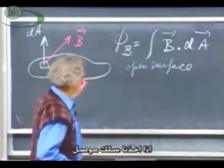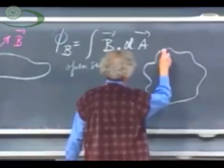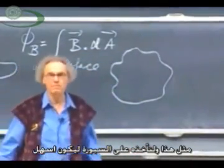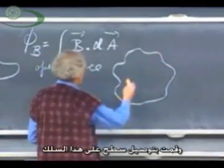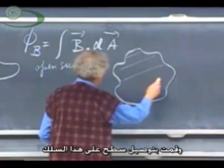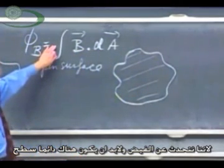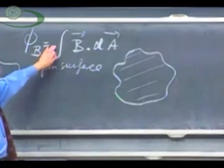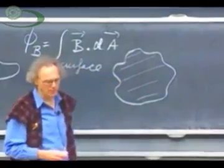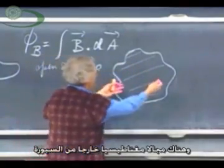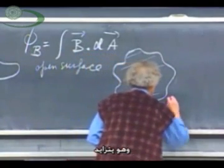If we take some kind of a conducting wire and I attach to this wire a surface — because the moment that you talk about flux you must attach to this wire a surface, always specify your surface. A flux can only go through a surface, so this is my surface now, for simplicity. And there is a magnetic field coming out of the blackboard at me, and it is growing, it is increasing.